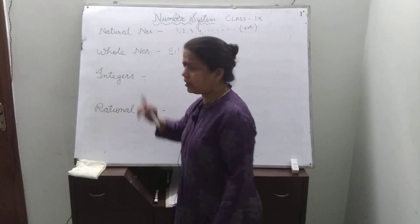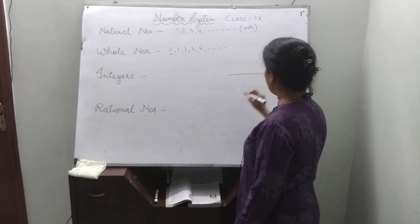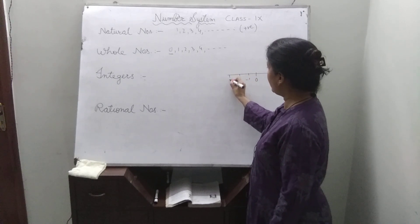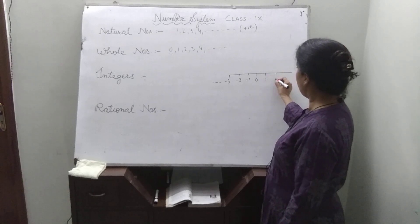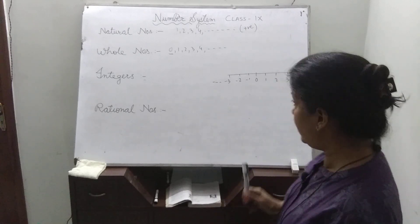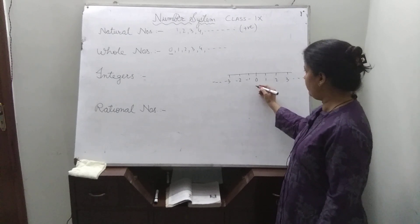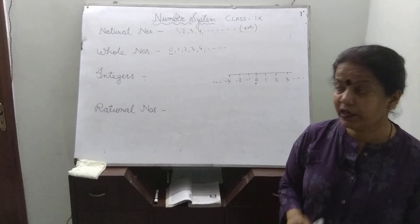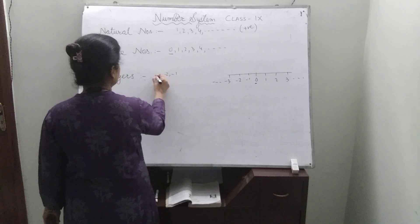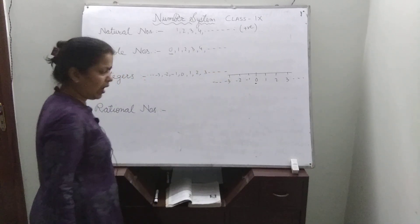Now come to the next part: integers. You did this in your junior classes about the representation of numbers on the number line. The integers — all these numbers, positive as well as negative including 0 — are integers. So in integers, all the negative numbers including 0 and positive numbers are integers.